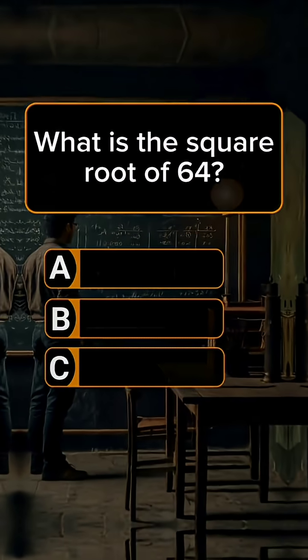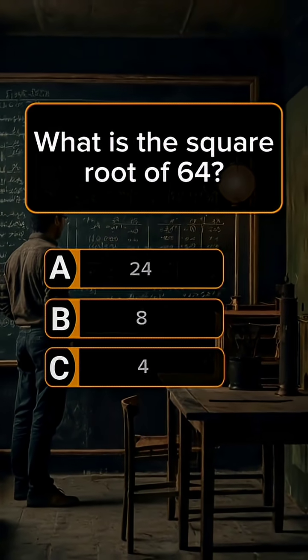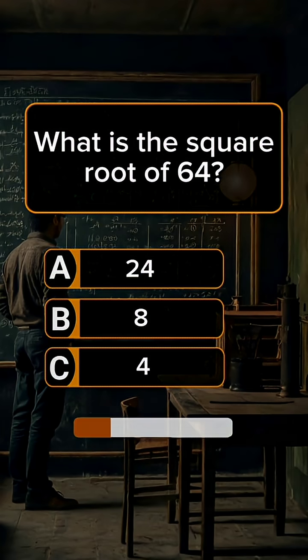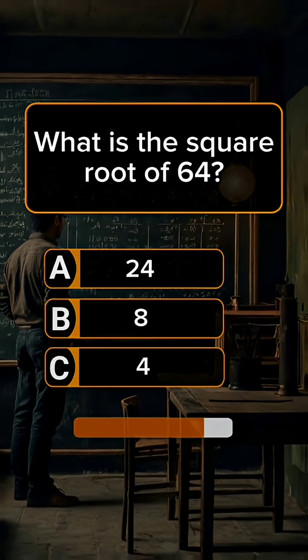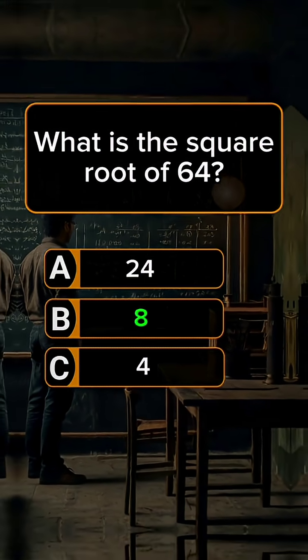Question 4. What is the square root of 64? Answer B: 8.